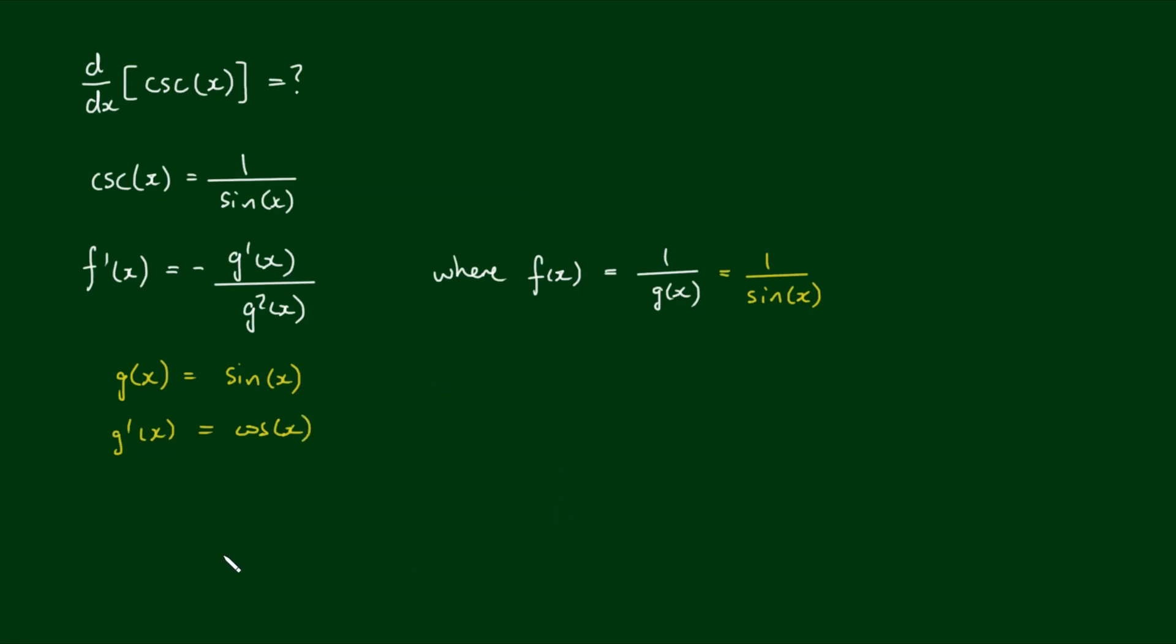So now we just plug and chug. So it follows that f' is equal to negative cosine of x divided by the sine squared of x. Now I'm not finished yet because I can express this as minus 1 over the sine of x by cosine of x over the sine of x.